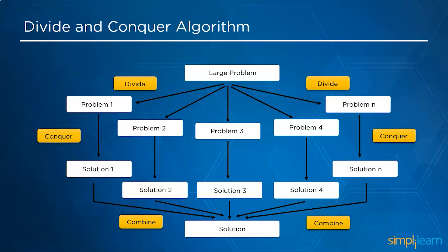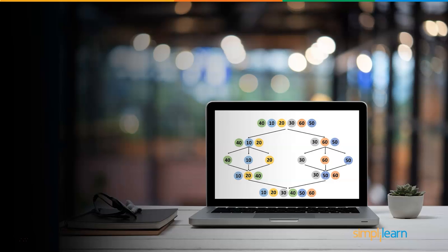Then we conquer all the solutions to the specified subproblems as solution 1, 2, 3, 4 and so on. And finally, we merge all the solutions to get one definitive solution. That was the divide and conquer algorithm.